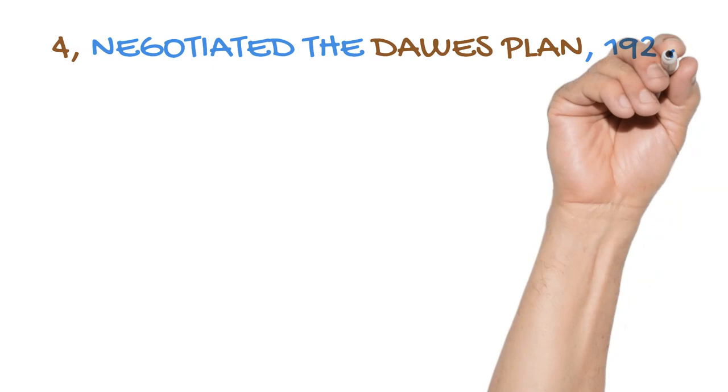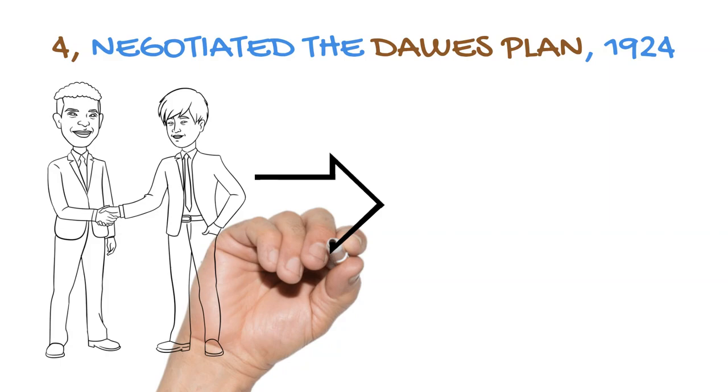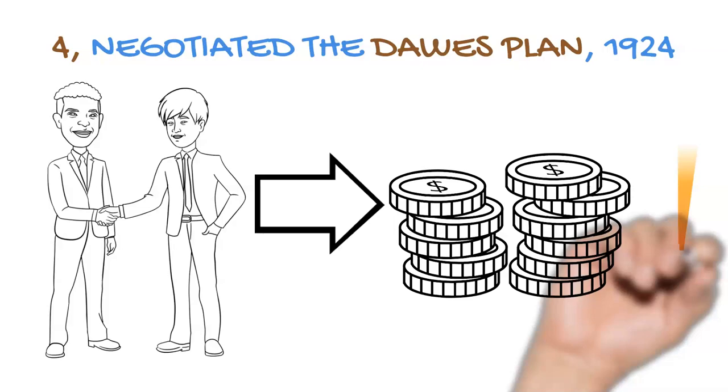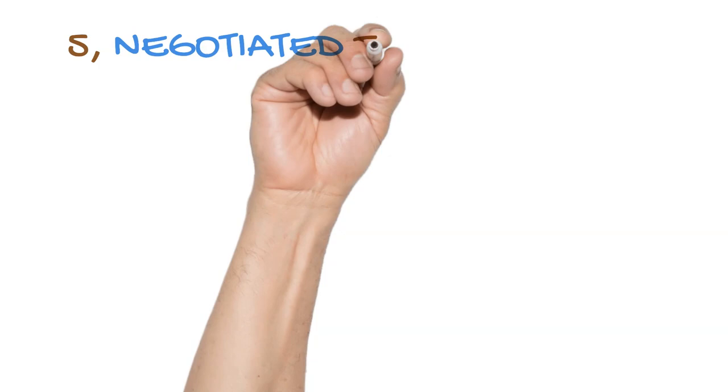In 1924, Stresemann helped negotiate the Dawes Plan with American banker and former director of the Bureau of the Budget, Charles Dawes. This plan reduced the amount of reparations Germany had to pay until their economy could sustain a higher rate of payment.